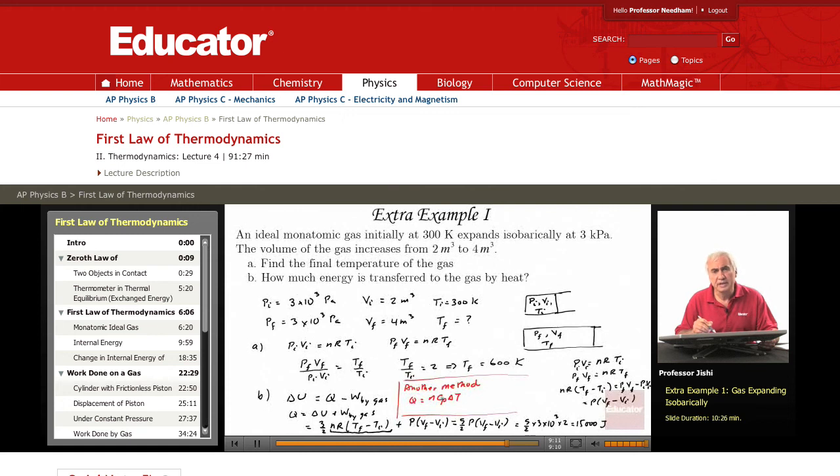Where CP is the specific heat at constant pressure for an ideal monatomic gas. As we discussed in the lecture, CP is 5R over 2. CV is 3R over 2, and CP is CV plus R, which is 5R over 2. So this is n times 5R over 2 delta T.